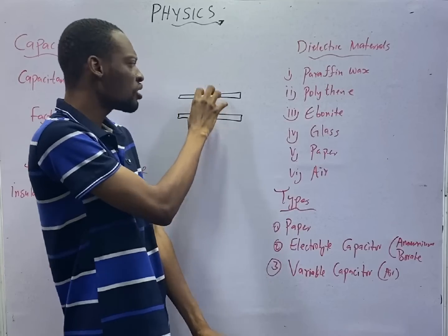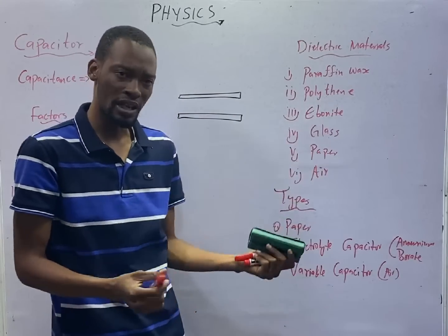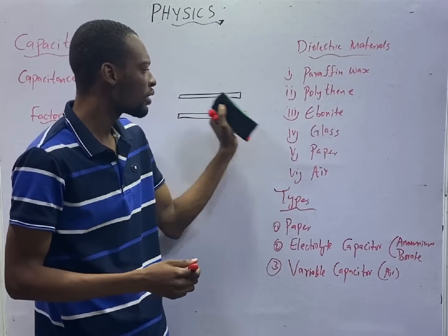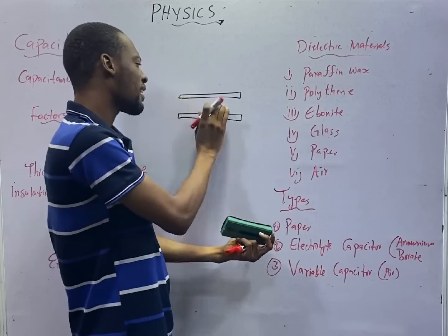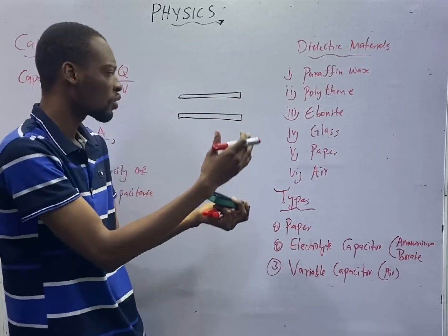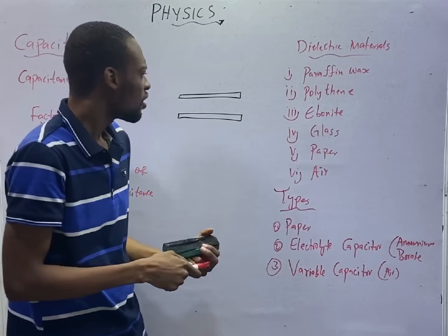This, in between two conductors, you can decide to put paraffin wax, like paper wax, or polythene, or ebonite, or glass, or even air can be your dielectric material in between the two conductors. You form a capacitor.